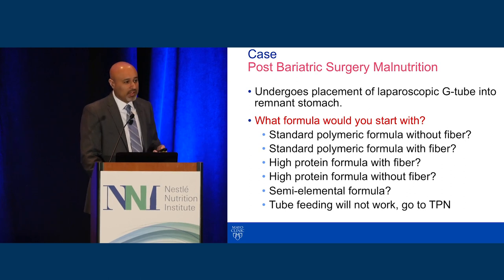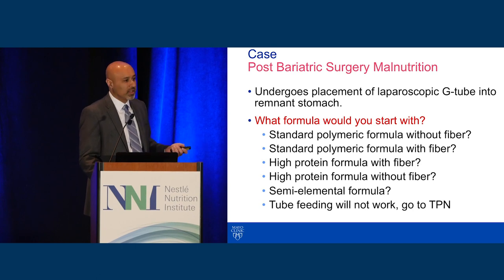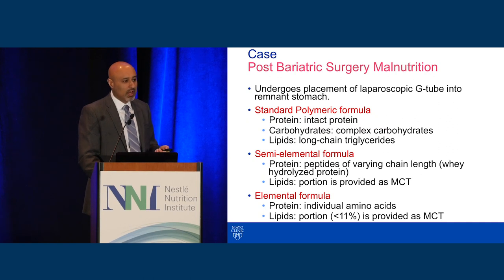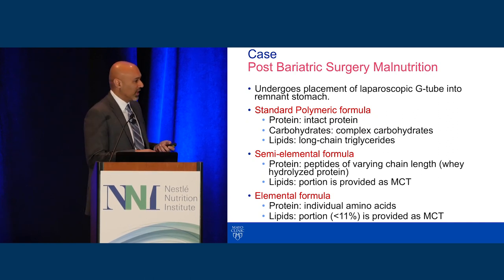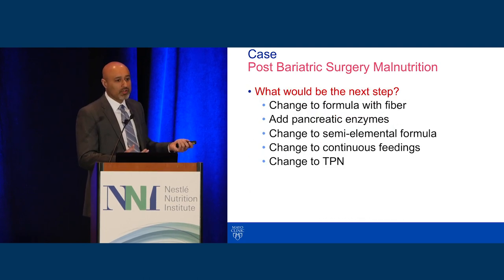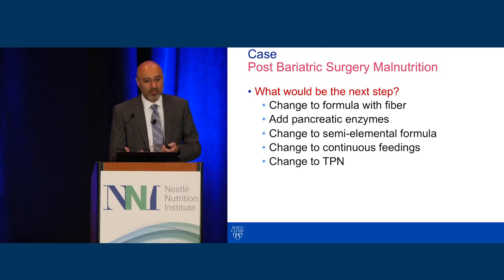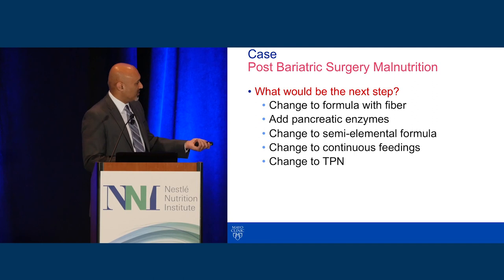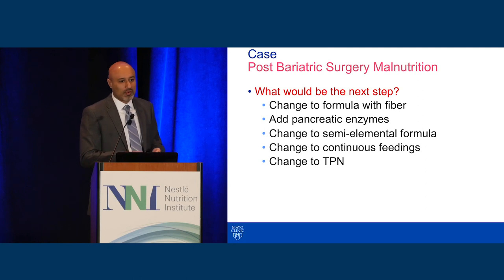With this, we decided to feed into the remnant stomach. She underwent placement of a G-tube into the remnant stomach—we thought this would offer more options than a nasal jejunal tube, and we were a little shy of going down the jejunostomy route. The next question was how to feed her: standard polymeric formula, fiber or no fiber, high-protein, or semi-elemental right from the beginning? Or go to TPN? We weren't giving up—we wanted to go down the enteral route. The major differences between these formulas: standard polymeric has intact protein, complex carbohydrates, and long-chain triglycerides; semi-elemental provides peptides with pre-done digestion; elemental formulas are even more broken down.